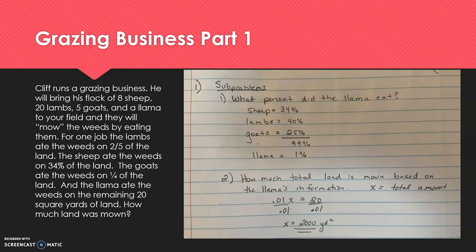the goats ate one-fourth, which is 25 percent. When we add those together, we get that 99 percent of the land has been mowed by the sheep, lambs, and goats, meaning the llamas just take care of one percent. Now that we know the percent that corresponds to how many square yards of land they have eaten, we can set up an equation to solve for the full amount of land.